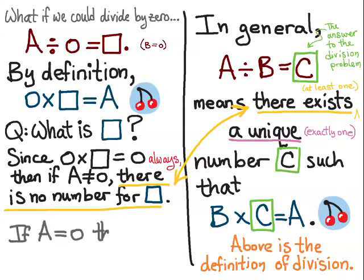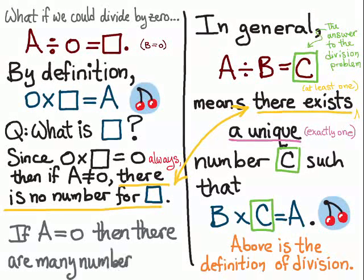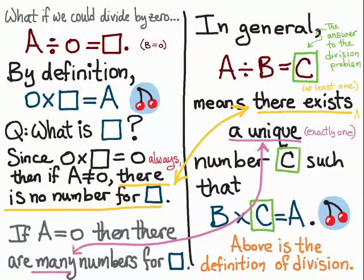On the other hand, if A is equal to zero, then there are many numbers for what could go in the box, and this contradicts our requirement that the number C is unique. And so in this case, zero divided by zero is undefined because it could have many different answers, and so that's why you can't divide by zero.